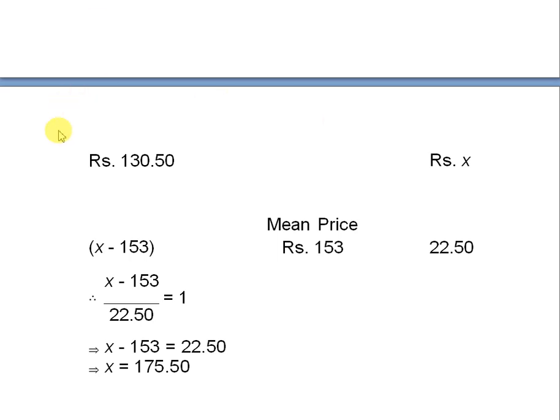We just put on the values and we solve it. So it is x minus 153 divided by 22.50 equals to 1. Once you solve it, you get x equals to 175.50, which is your answer.